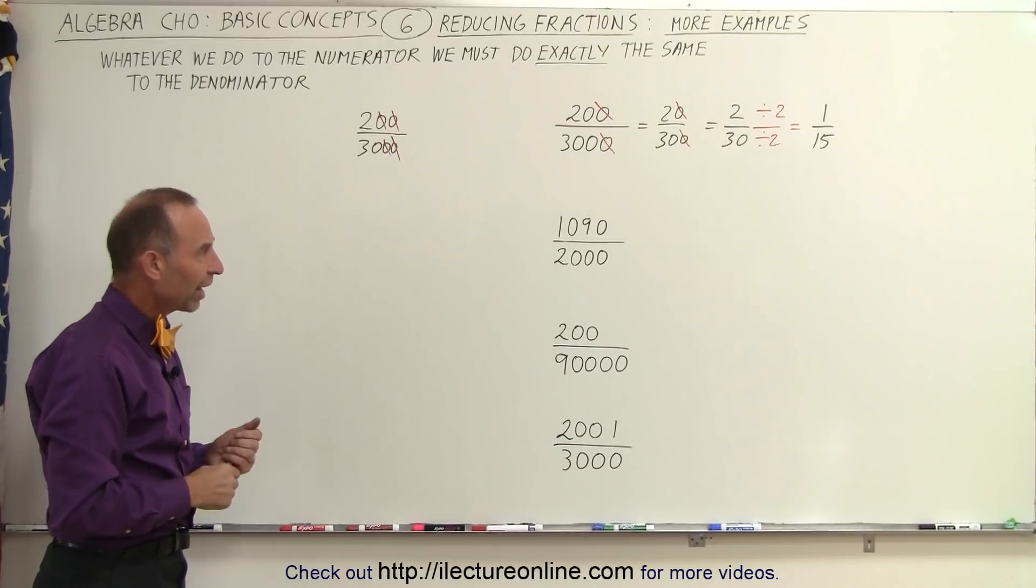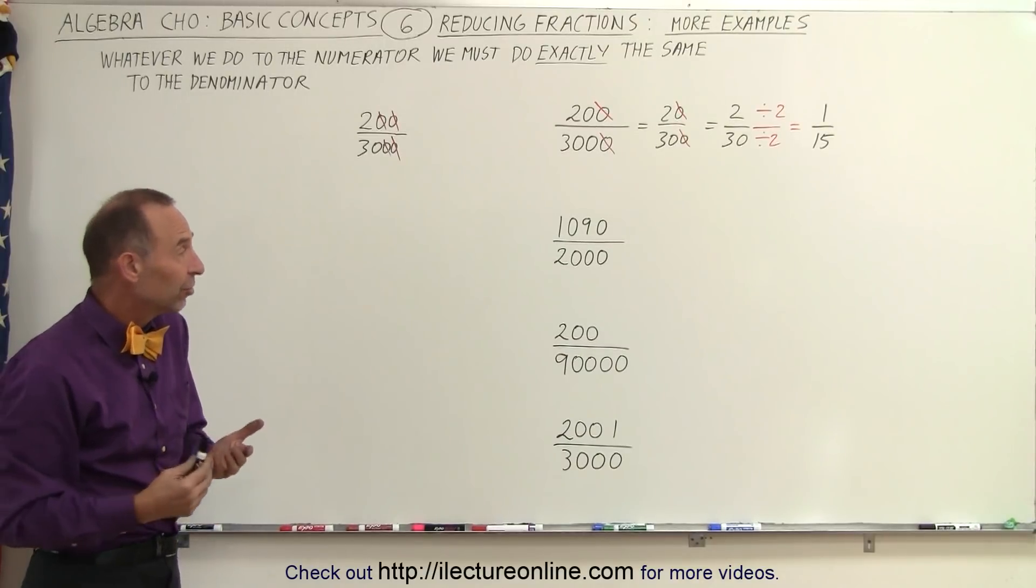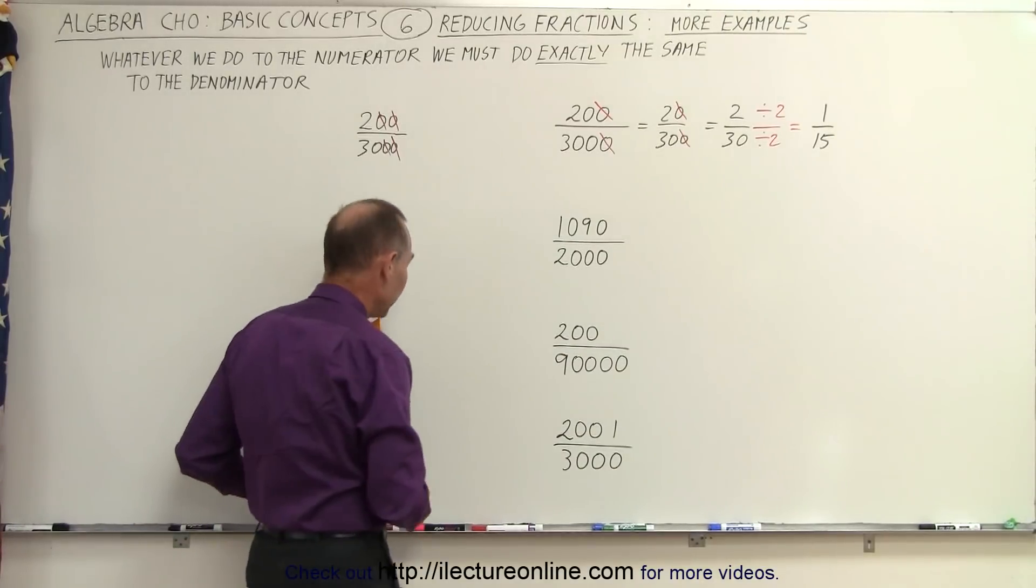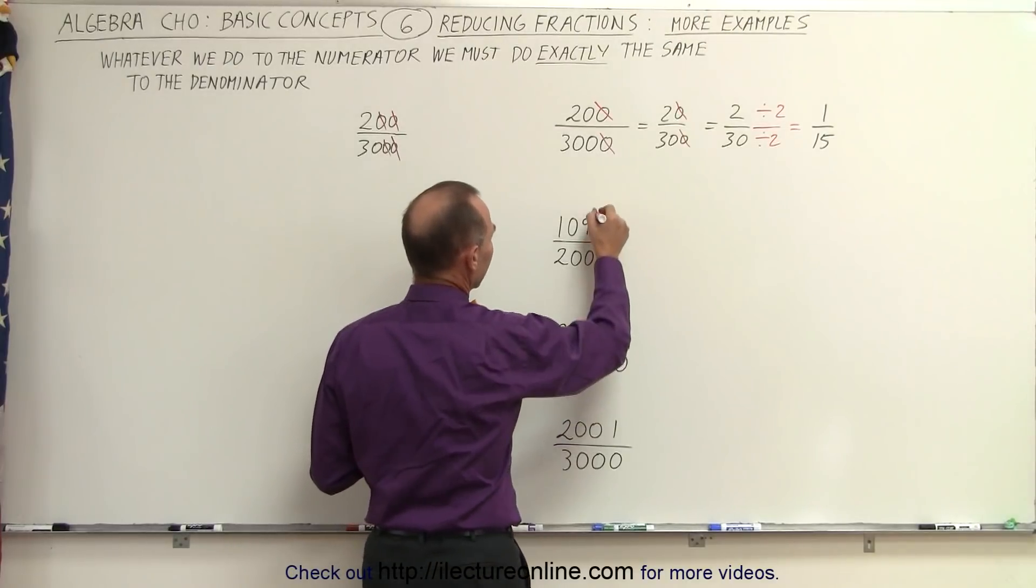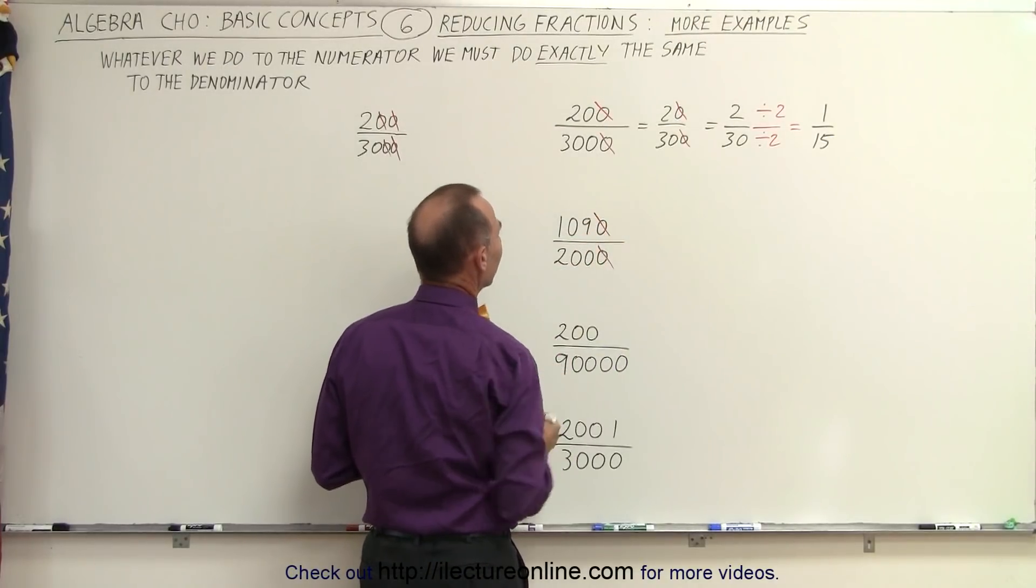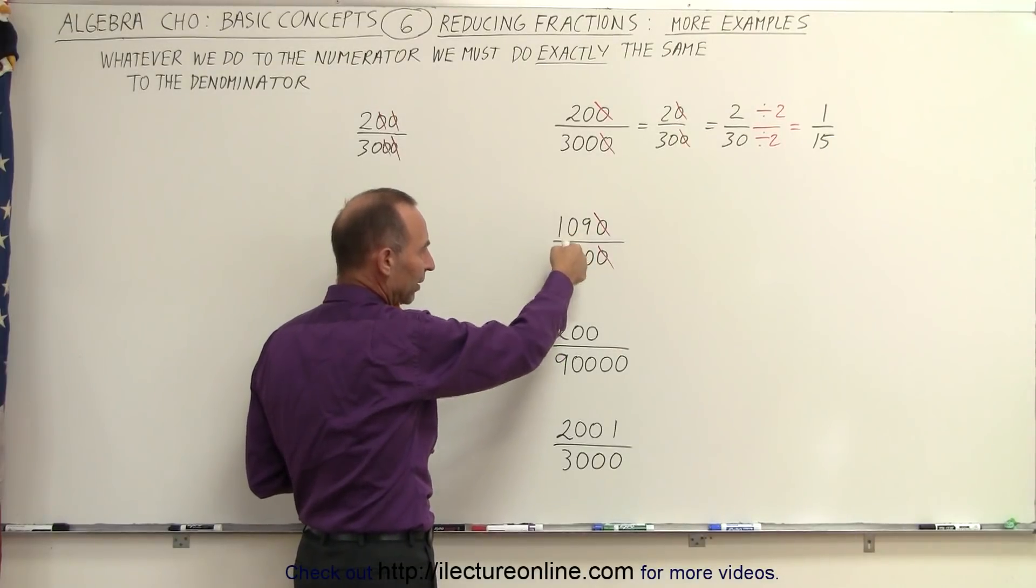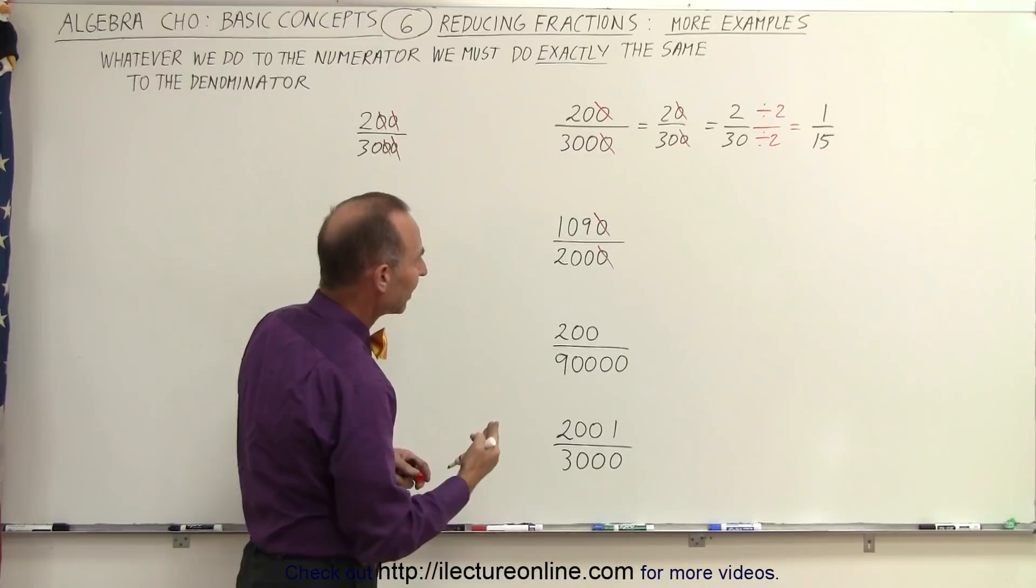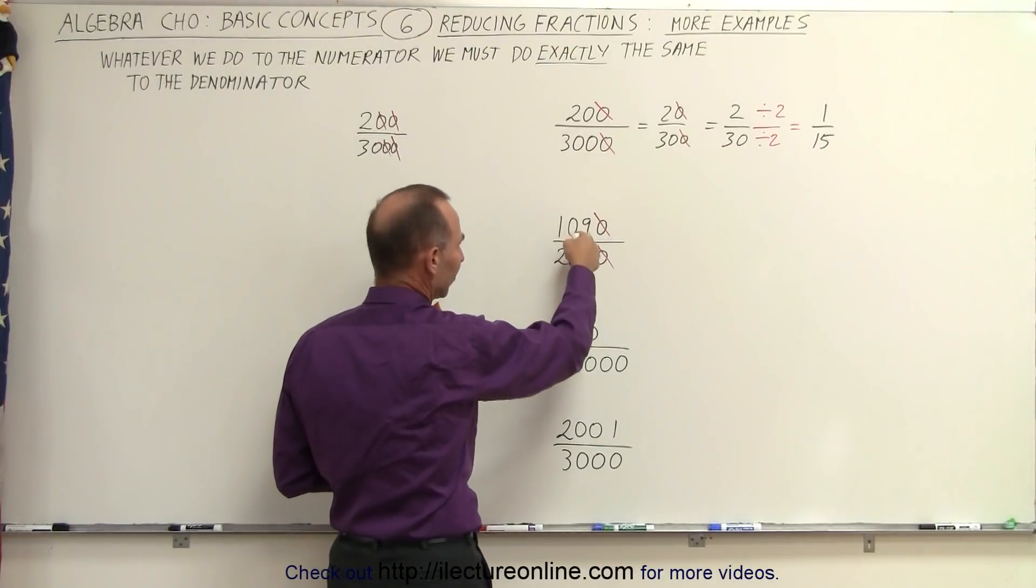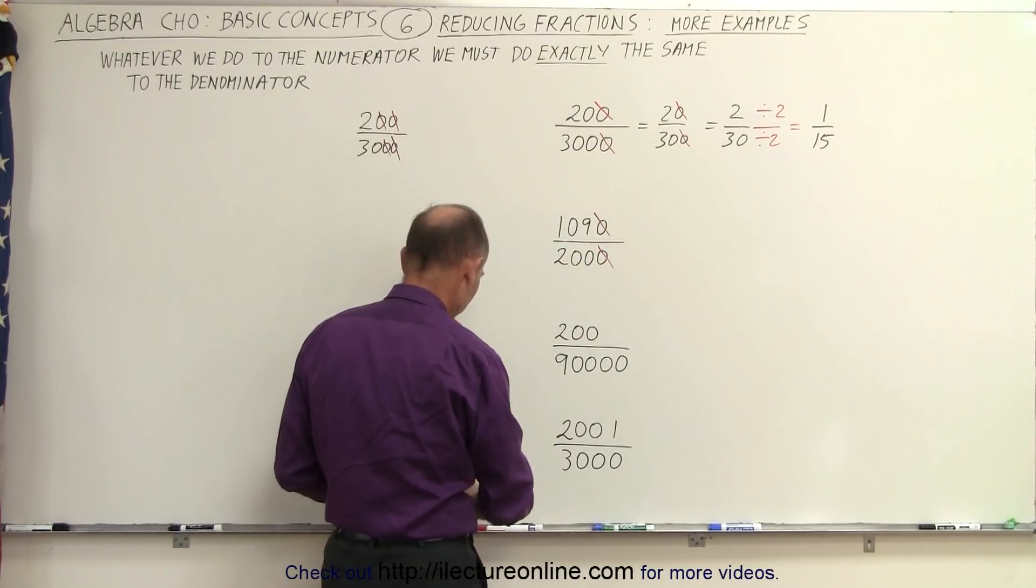Now take a look at the second fraction. Again, they both end in a 0, so we can divide both the numerator and the denominator by 10. And so now we end up with 109 divided by 200. You might be tempted to cross this 0 out and this 0 out, but you cannot do that. You need to start from the back, so you cannot arbitrarily pick a 0 there and pick a 0 there and cancel that out.